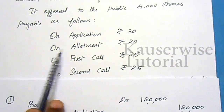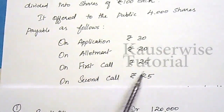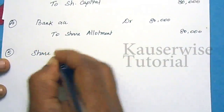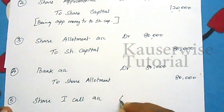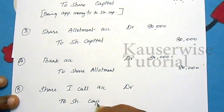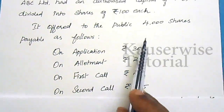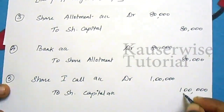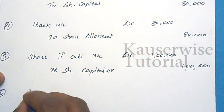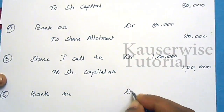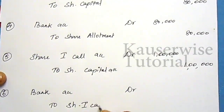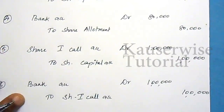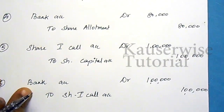Fifth, first call money due — Share First Call Account Dr. to Share Capital: 4,000 × 25 = rupees 1,00,000. Sixth, first call money received — Bank Account Dr. to Share First Call: rupees 1,00,000. The entire amount was received without any default.